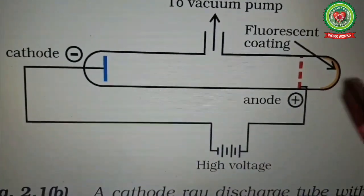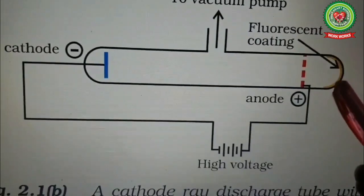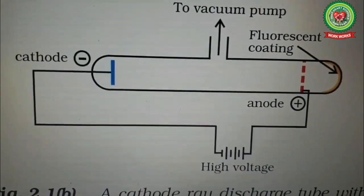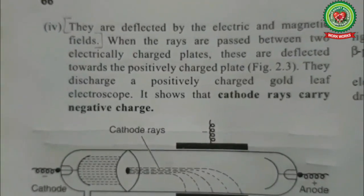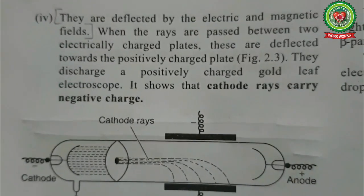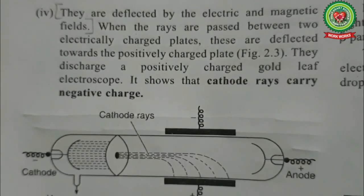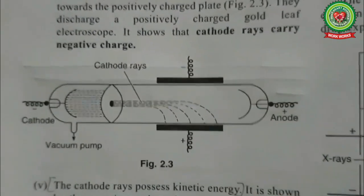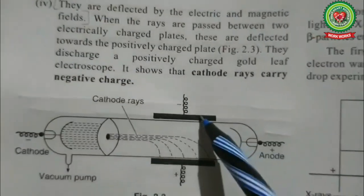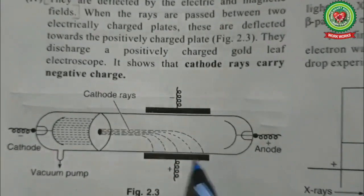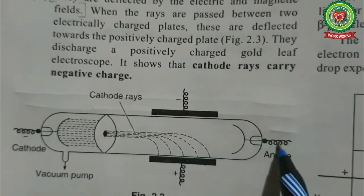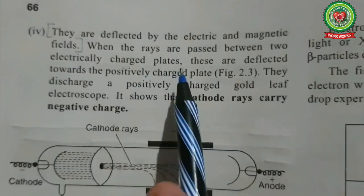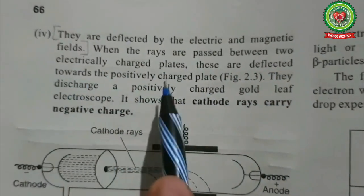The third property was that the rays can be deflected by electric and magnetic fields. When passed through two electrical charge plates — a positive and a negative plate — the cathode rays were deflected towards the positively charged plate.